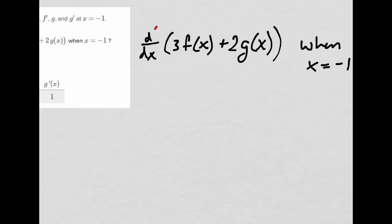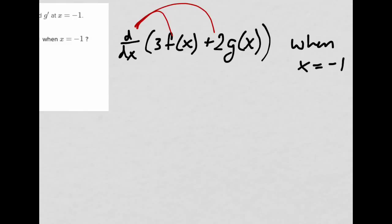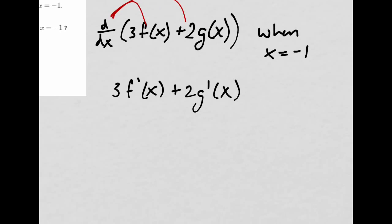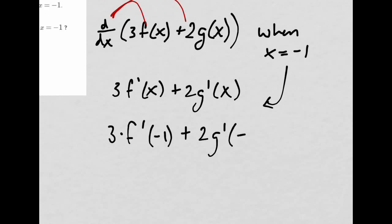First, I can distribute the derivative operator. Remember, the constants, they just go in front of the derivative operator. That was in the first video. And I just get 3f prime of x plus 2g prime of x. And then now I plug in the -1. Well, 3 times f prime of -1. This one's an easy one. 2g prime of -1.